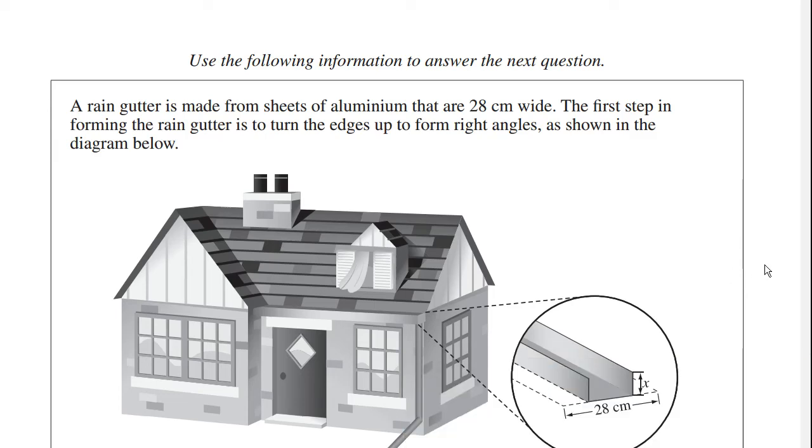A rain gutter is made from sheets of aluminum that are 28 centimeters wide. The first step in forming the rain gutter is to turn the edges up to form right angles, as shown in the diagram below.